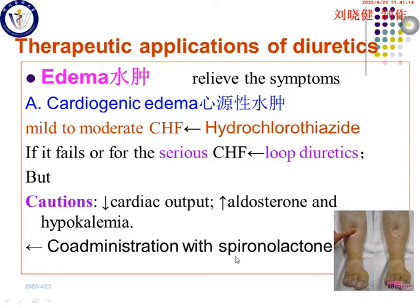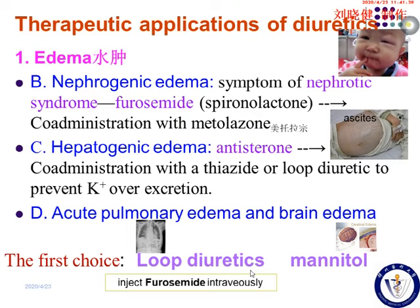Spironolactone (antisterone) for congestive heart failure has significance in preventing arrhythmia caused by heart failure. For nephrogenic edema, which occurs more frequently around the eyes, we usually choose furosemide to control symptoms of nephrotic syndrome, also used in co-administration with spironolactone and metolazone.